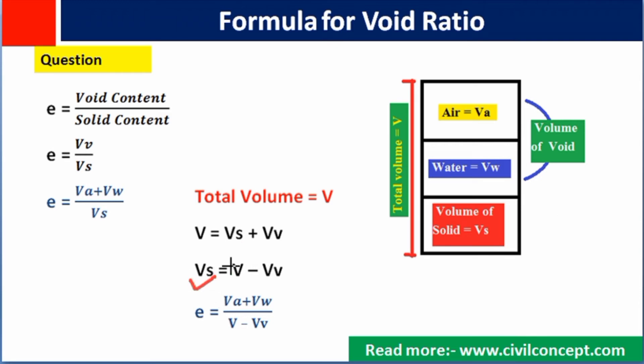When we calculate Vs, then this VV will be in this side and it will become negative. So Vs will be V minus VV, which is total volume, and VV is the volume of void.